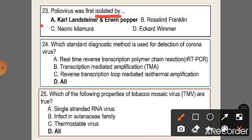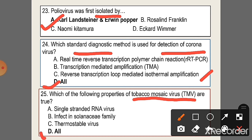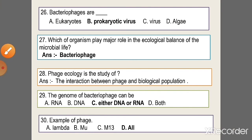Question 23: Poliovirus was first isolated by Karl Landsteiner and Erwin Popper. Question 24: Which standard diagnostic method is used for detection of coronavirus? Option D, all: real-time reverse transcription polymerase chain reaction and reverse transcription loop-mediated isothermal amplification. Question 25: Which properties of Tobacco mosaic virus are true? Option D, all: it is a single-stranded RNA virus, infects the Solanaceae family, and is thermostable.